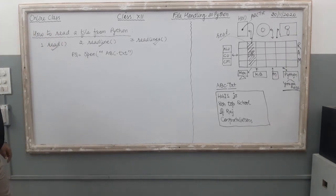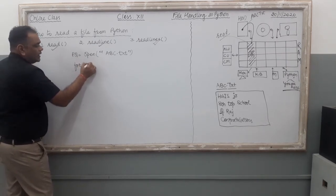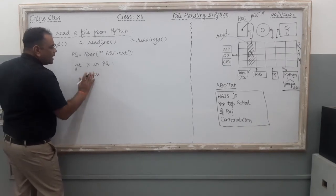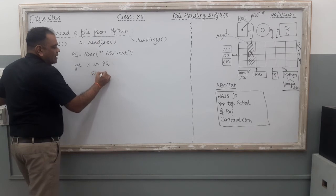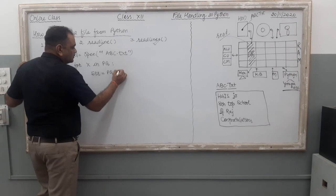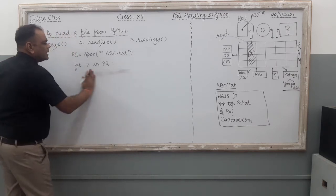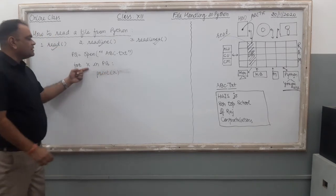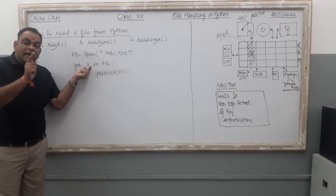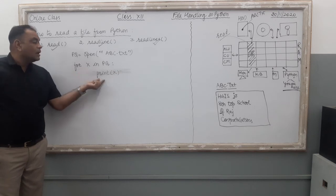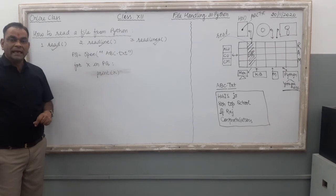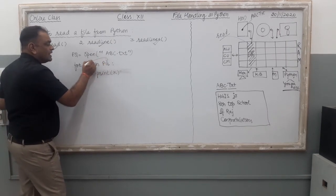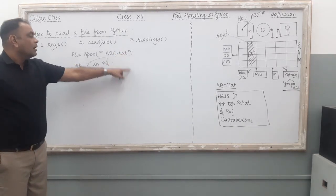With `for x in pq`, `x` denotes each and every line of your file. In each iteration of the for loop, the first line is stored in `x`, and you display it with `print(x)`. Then the loop runs a second time, storing the second line in `x`, and so on — the entire file is read line by line using this simple for loop.